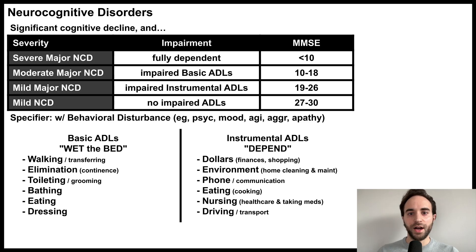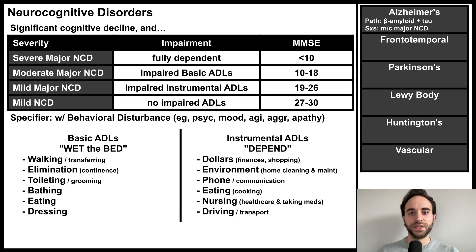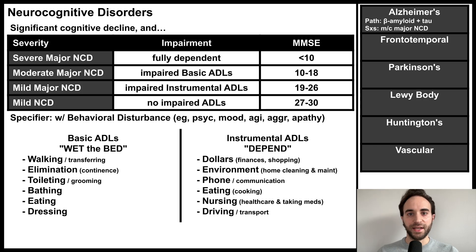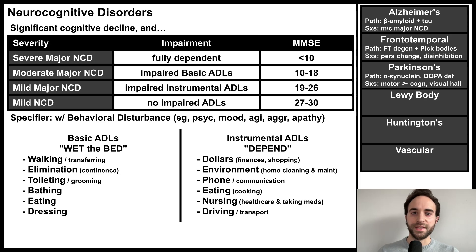These are the basics of diagnosing neurocognitive disorders, but note that these diagnoses do not describe the underlying cause of the cognitive decline. Therefore, let's briefly review the common etiologies of major neurocognitive disorder. Alzheimer's dementia is the most common cause of major NCD in the elderly, caused by the accumulation of beta-amyloid plaques and tau tangles in the brain. Frontotemporal dementia is caused by frontal and temporal lobe degeneration and is associated with Pick bodies. It characteristically involves a marked change in personality, often with significant disinhibition. Parkinson's dementia is caused by alpha-synuclein accumulation in the brain, which leads to dopamine deficiency, particularly in the substantia nigra.